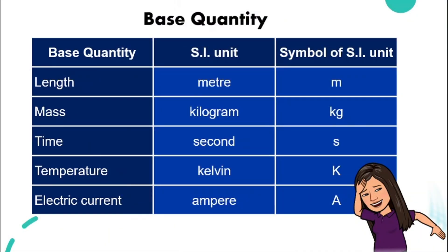So for length, it will be meter. You can write 100 meter, the whole word, or you can use the symbol 100M. M represents meter. For mass, it will be kilogram or kg. Time will be second or the symbol will be S.